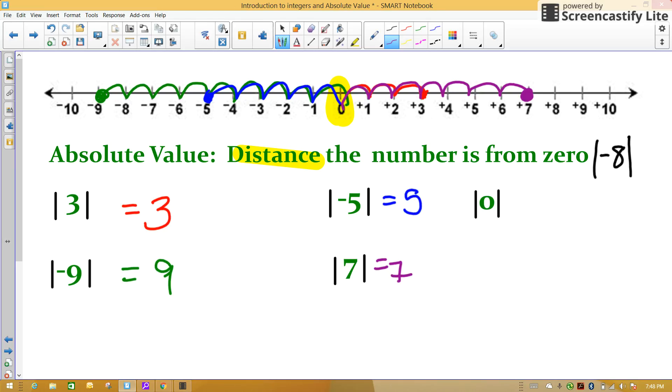How many spaces is zero from your number line? Well, if I find zero and I go to zero, it's actually zero spaces. Therefore, keep in mind that absolute value is not the opposite of the number. It's not just the positive of the number. It's the distance the number is from zero. Remember, distance is always positive.